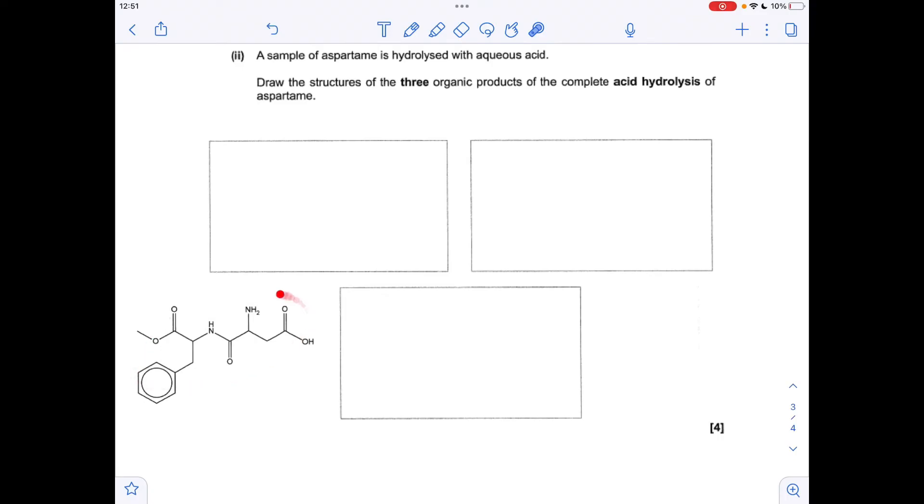Moving on to the next part. The aspartame is hydrolyzed with aqueous acid. We've just got to think about which bonds are going to be broken. The ester bond will be broken, so this one here. And the amide bond, that's that one there. OK so we'll just take each part in turn.